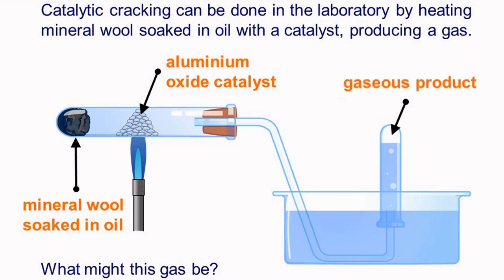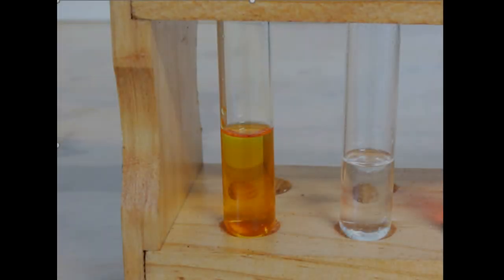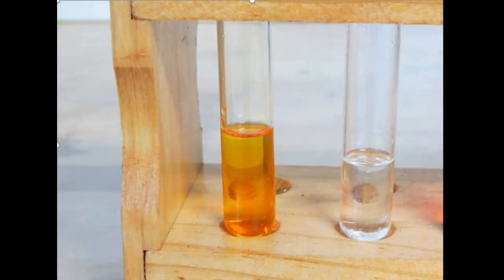The presence of carbon to carbon double bonds allows alkenes to react in ways that alkanes cannot. This allows us to tell alkenes apart from alkanes using a simple chemical test. Bromine water is an orange solution of bromine. It becomes colorless when it's shaken with an alkene. Alkenes can decolorize bromine water but alkanes cannot.